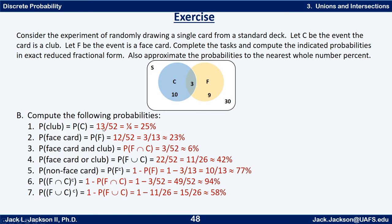Looking at the clubs, there are 13 in there out of a total of 52, so P(C) = 13/52 = 1/4, or 25%. For face cards, there are 12 total, so P(F) = 12/52 = 3/13, about 23%. For a face card and a club, there are three of those, so P(F∩C) = 3/52, approximately 6%.